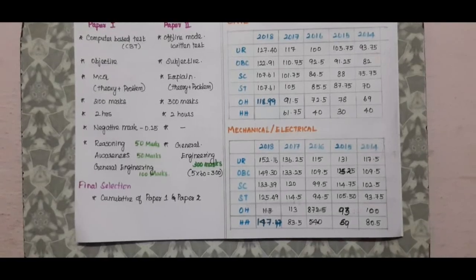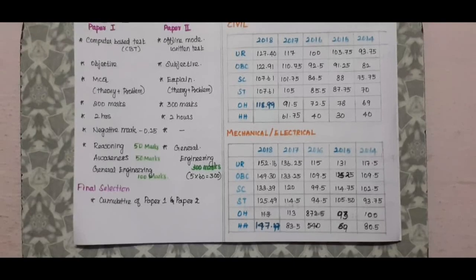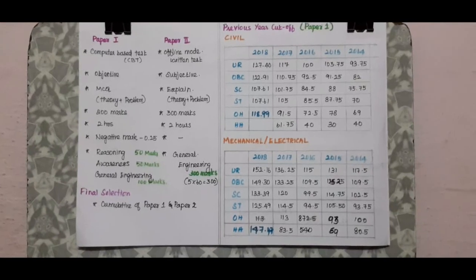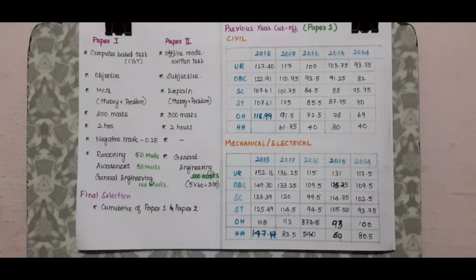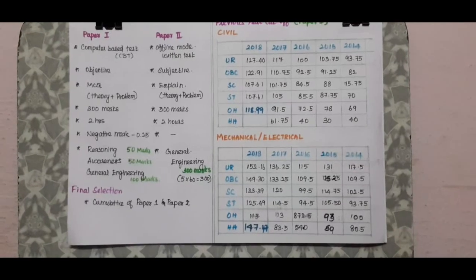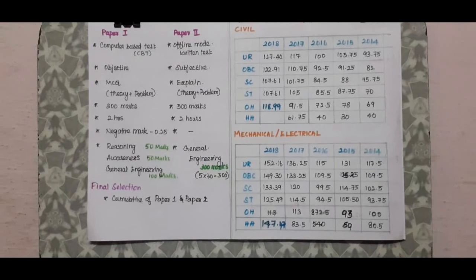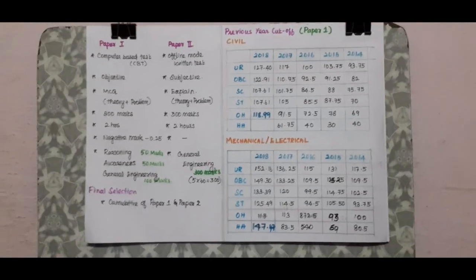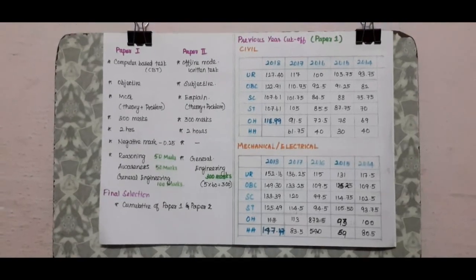For final selection, the total of Paper 1 and Paper 2 is considered. You must clear Paper 1 cutoff first before proceeding to Paper 2.